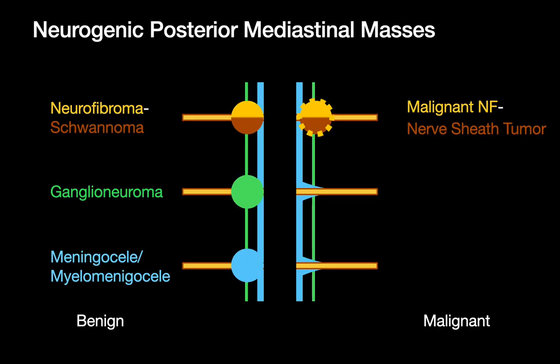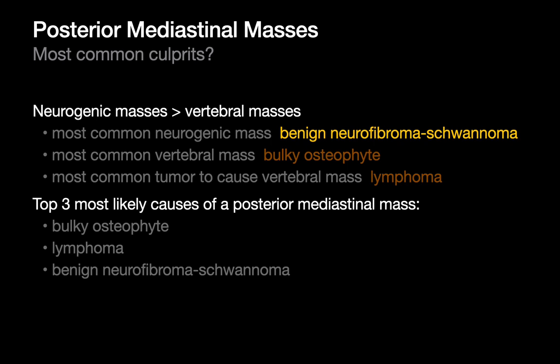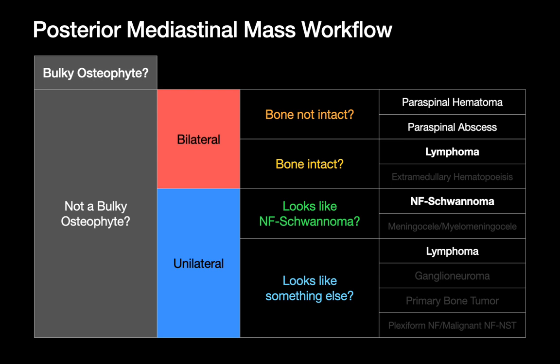Putting everything together: some posterior mediastinal masses are neurogenic and some are vertebral. The most common overall culprits are bulky osteophytes, lymphoma, and benign neurofibromas and schwannomas. The most common neurogenic mass is the neurofibroma or schwannoma, the most common vertebral mass is a bulky osteophyte, and the most common vertebral tumor is lymphoma. This influences the workflow for interpreting a posterior mediastinal mass. The first question to ask is: am I being fooled by a bulky osteophyte?